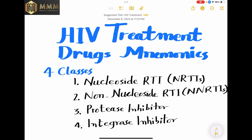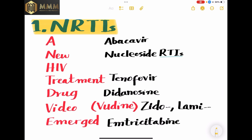The first group is nucleoside reverse transcriptase inhibitors, also known as NRTIs. The second group is non-nucleoside reverse transcriptase inhibitors, abbreviated as NNRTIs. The third group is protease inhibitors, and the fourth one is integrase inhibitors.